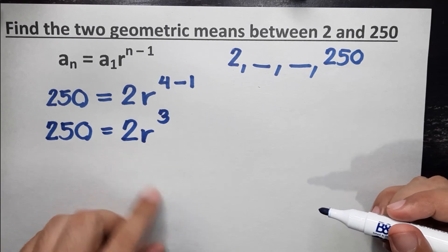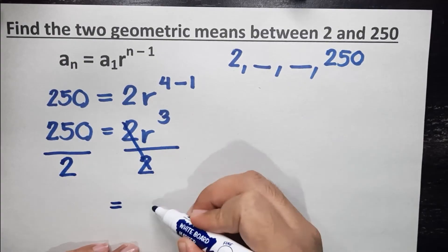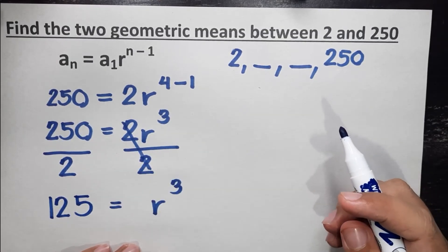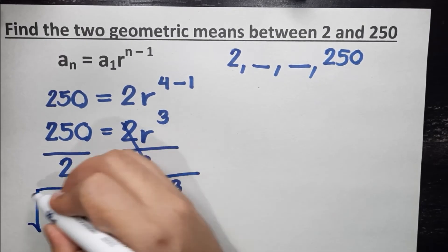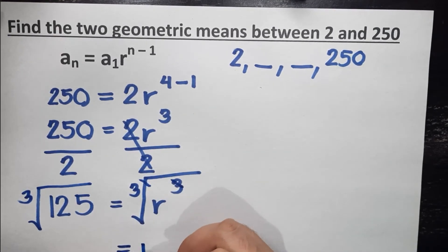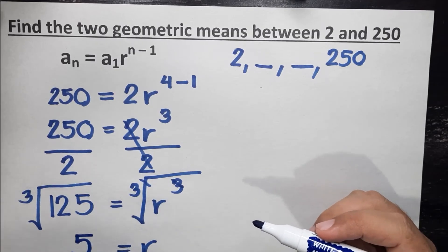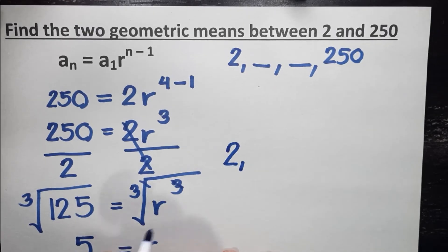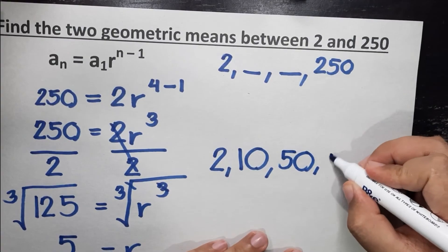We have to eliminate 2, so we divide both sides by 2. We get r cubed is equal to 125. We are looking for the value of r, so we get the cube root of both sides. The cube root of 125 is 5, because 5 times 5 times 5 equals 125. Now that we have the common ratio, we can complete the missing terms: 2 times 5 gives us 10, times 5 gives us 50, times 5 gives us 250. So 10 and 50 are our two geometric means.